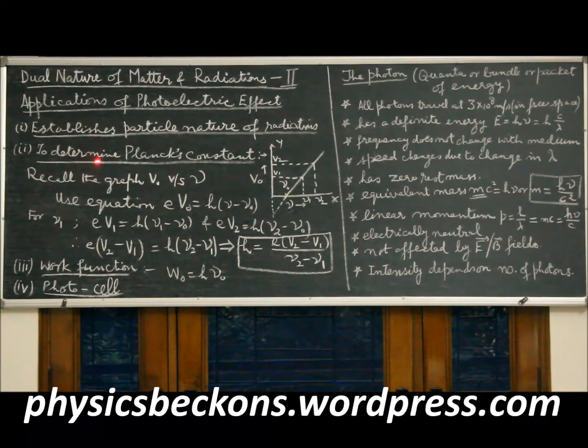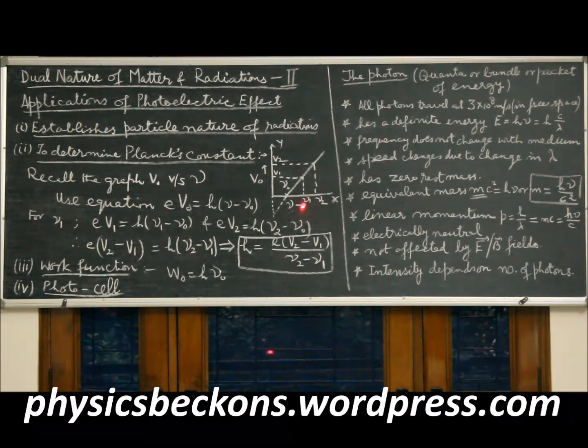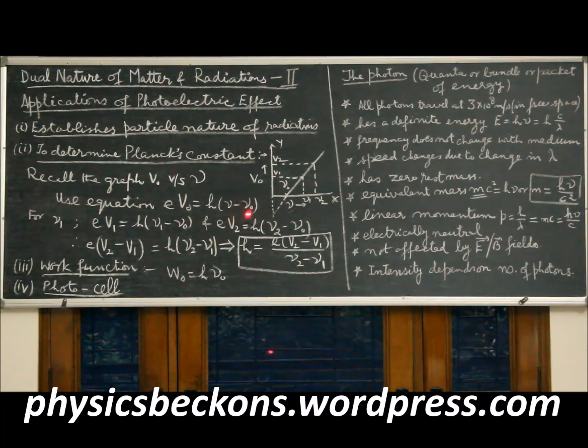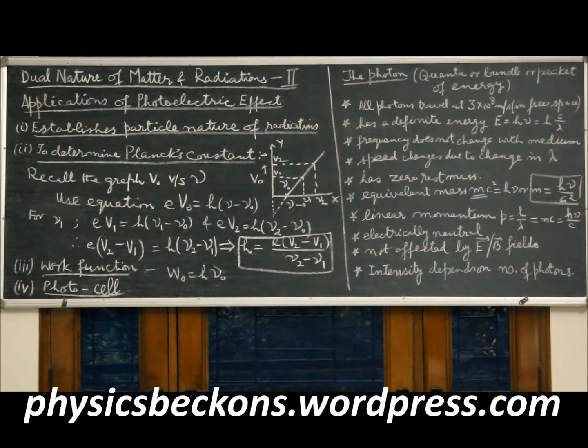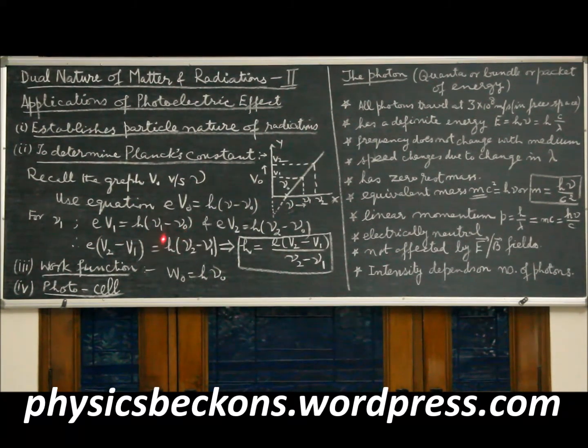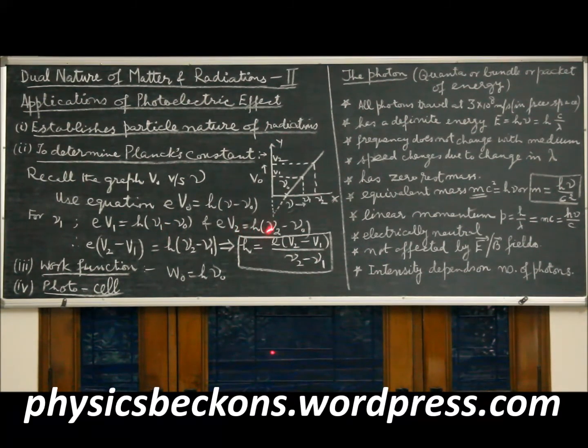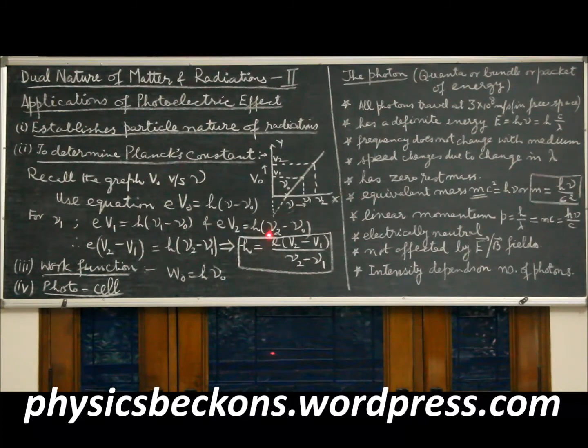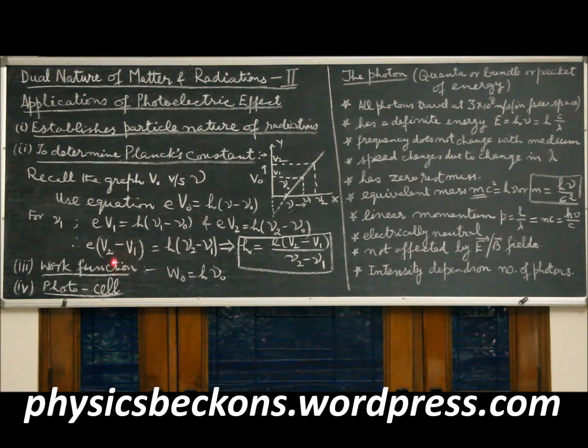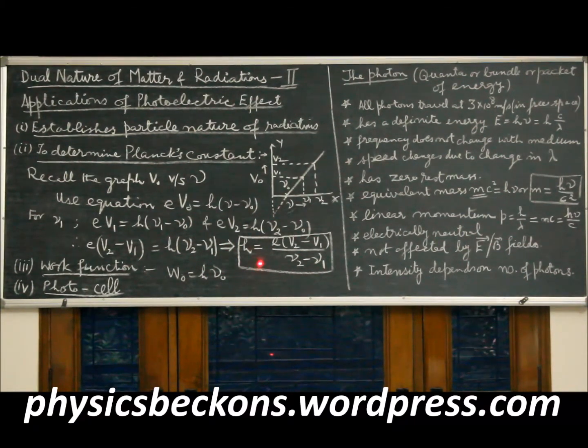The effect is also used to determine the value of Planck's constant. Recall we had a graph between stopping potential and frequency, and according to the equation e V0 equal to h nu minus nu0 given by Einstein. If we see this graph and take two convenient points, you can write e V1 equal to h nu1 minus nu0 for frequency nu1. Similarly for frequency nu2, e V2 is equal to h nu2 minus nu0. Subtracting the equations you get e(V2 minus V1) equal to h(nu2 minus nu1). This simple mathematics will give you the expression for h.